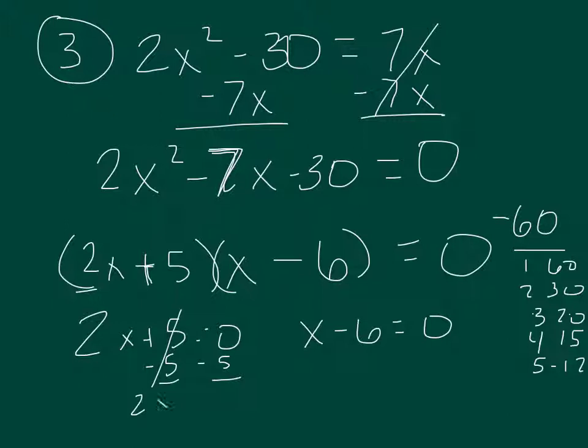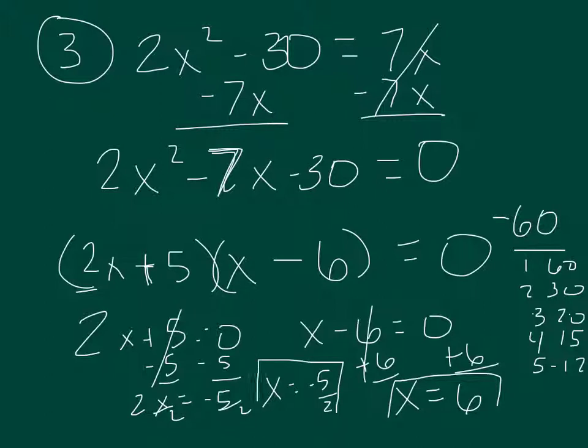so you have 2x equals negative 5. Divide by 2. You get x equals negative 5 over 2. And then on the other side you just have to add 6. So x equals 6. So you should get at least 2 answers every time. If it's a fraction, that's fine.